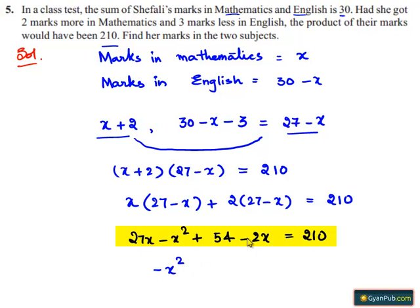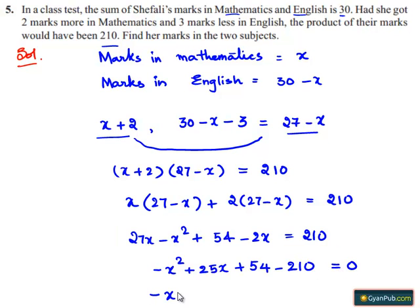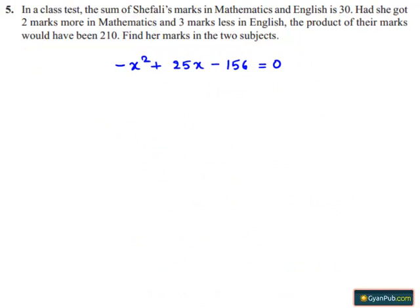27x minus 2x is 25x, so we have minus x² plus 25x plus 54. Transposing 210 to the LHS gives minus x² plus 25x minus 156 equals 0. This equation can be written as x² minus 25x plus 156 is equal to 0.